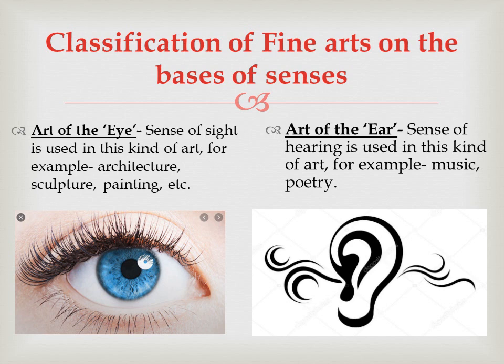Art of the eye is the type of art in which the sense of sight is used. For example, architecture, sculpture, painting, etc. Art of the ear is when the sense of hearing is used. For example, music, poetry, etc.